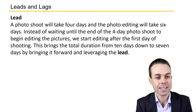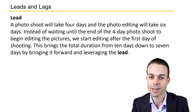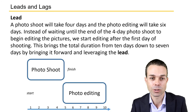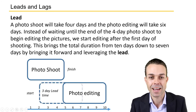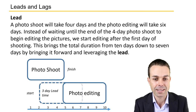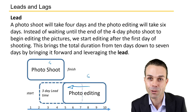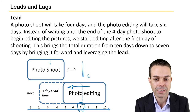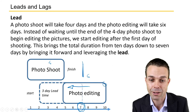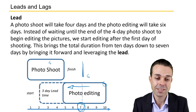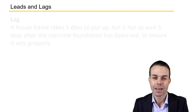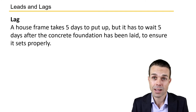Let's look at an example of lead time. A photo shoot takes four days and photo editing takes six days after that. Instead of waiting until the end of the four-day photo shoot to begin editing, we could start editing after the first day of shooting. So instead of 10 days total, we bring the photo editing forward — leading it forward — and our total time is now seven days. The two activities are done in parallel for a portion of those activities.